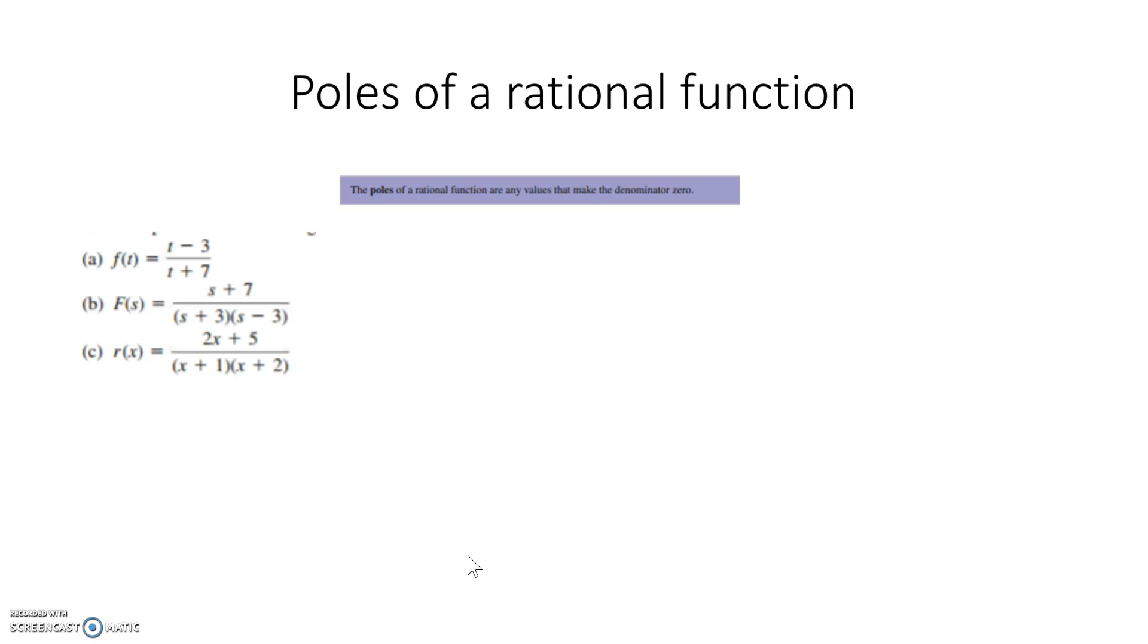Sometimes it's obvious, and sometimes we have to find it. So in example A, T can't equal negative 7, because otherwise if it did equal negative 7, you'd have 0 on the bottom.